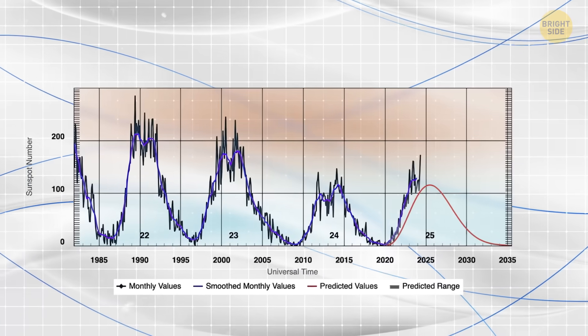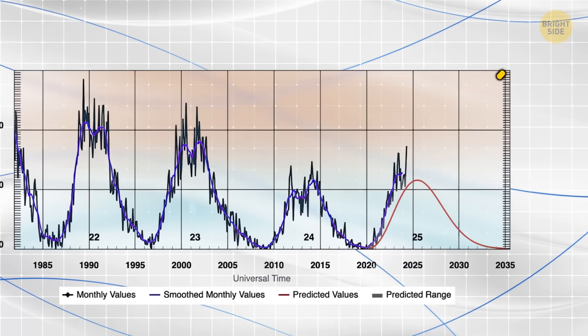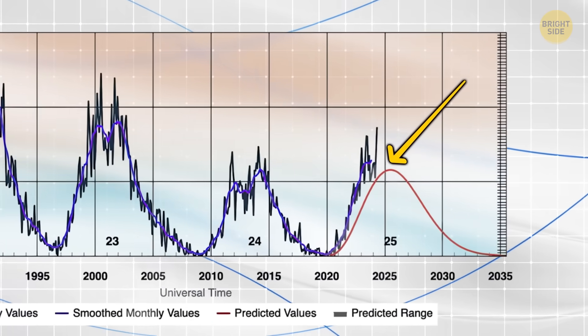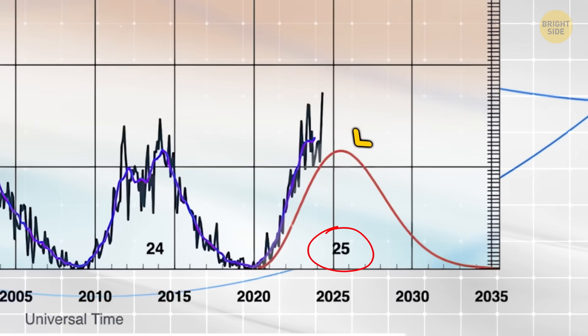So, right now, we're probably nearing the end of the Sun's current chaos phase, aka the peak of Solar Cycle 25.